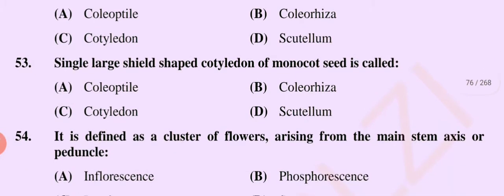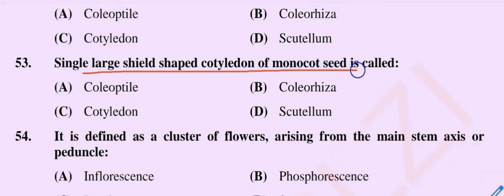Question number 53: A single large shield-shaped cotyledon of a monocot seed is called — option A coleoptile, option B coleorhiza, option C cotyledon, option D scutellum. The correct option is option D, scutellum.